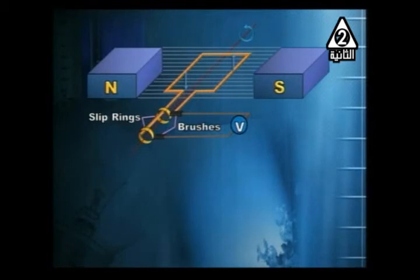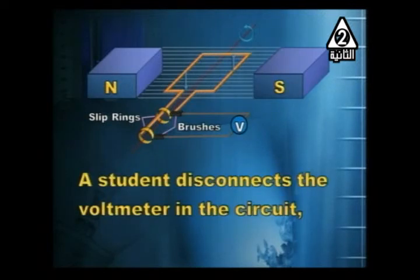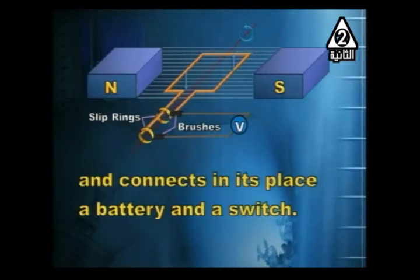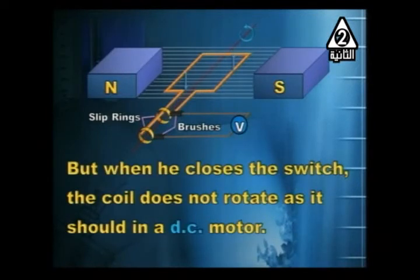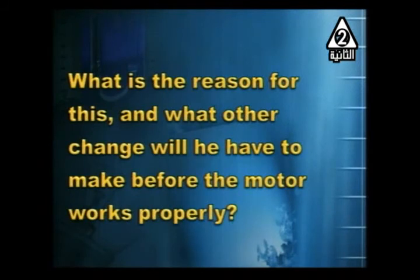Another type of question: A student has a circuit with a voltmeter. The student disconnects the voltmeter and connects in its place a battery and a switch — converting the device into a motor. However, when he closes the switch, the coil does not rotate as it should in a DC motor. What is the reason, and what change must he make before the motor works?